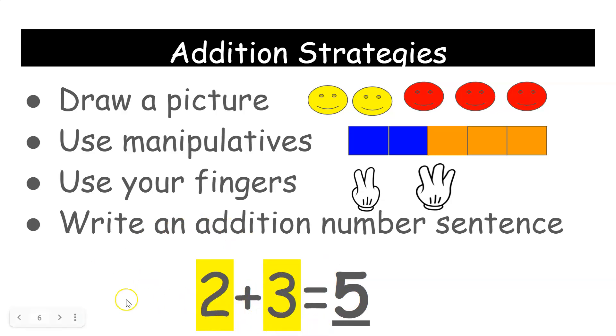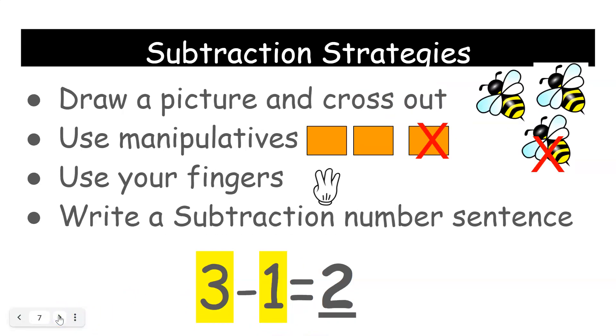Alright, and then we have our subtraction strategies. Again, draw a picture and cross out. So here we have 3-1, we cross one bumblebee out. Use manipulatives, put three manipulatives together, take one away.